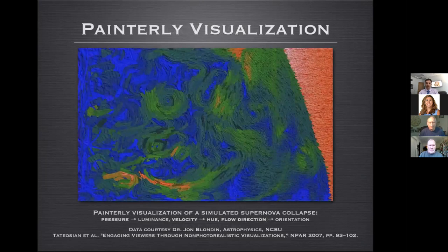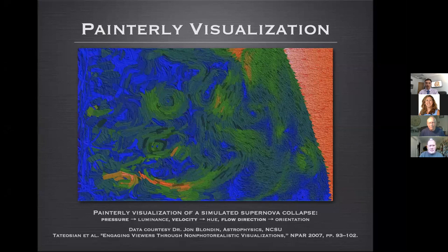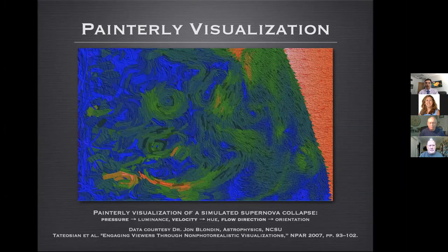This is one of our own visualizations. It looks somewhat painterly, and that's exactly the property we're trying to instill. It's actually a visualization of a slice through a simulated supernova collapse run by Dr. John Blondin at NC State University. Our interest is whether the aesthetic quality of a visualization provides any benefit over a standard flow-based visualization. We've run numerous controlled psychophysical experiments with psychology colleagues, and we've recently published work showing that if you take the extra time and effort to build an aesthetically pleasing visualization, you can increase memory for detail—an important property of any visualization.